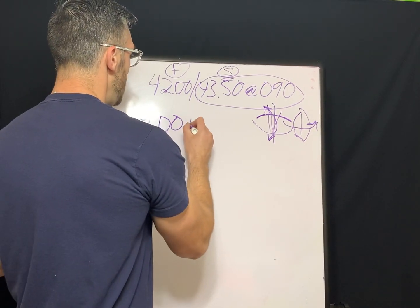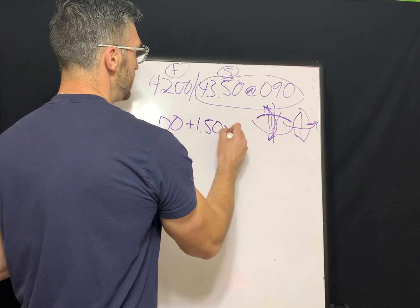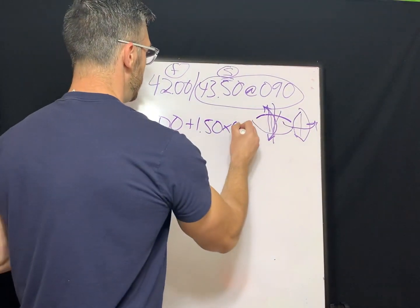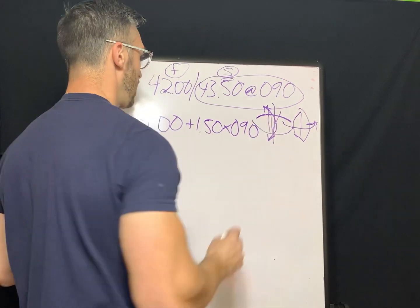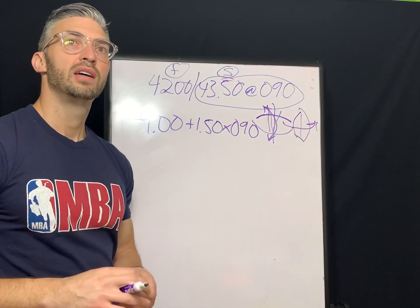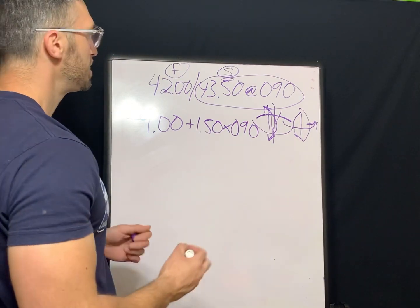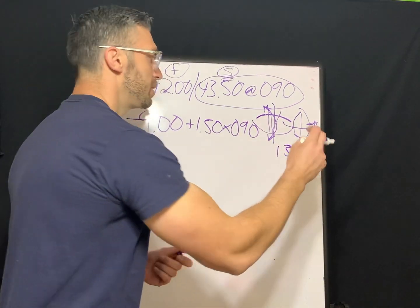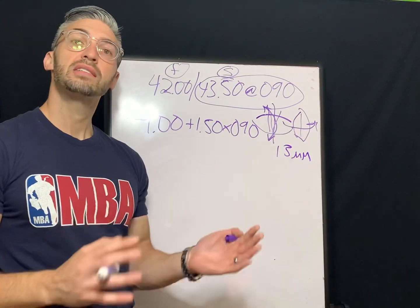So I'm going to put up a prescription here to go alongside with it. Let's do negative nine plus 150, we'll do axis 90. Okay, negative nine plus 150 axis 90. I hope you can see that. We're gonna say the vertex distance is 13 millimeters. That's very important.